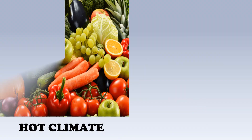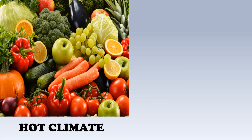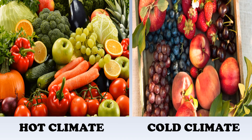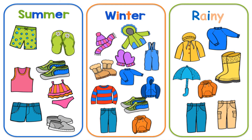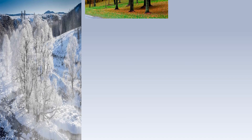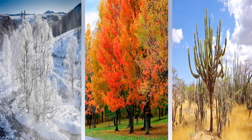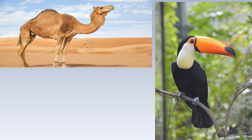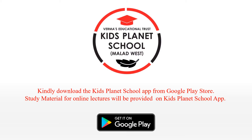Climate influences the type of food people grow and eat in a particular area, the type of clothes they wear, the types of homes they live in, and the types of plants that grow and animals that can live in the region.